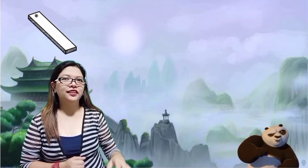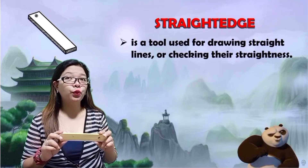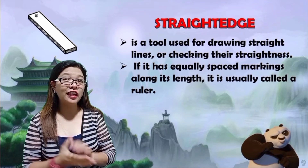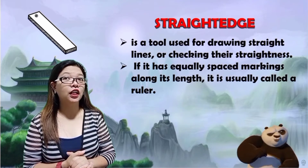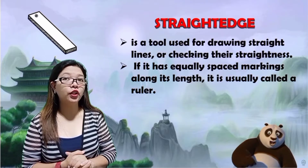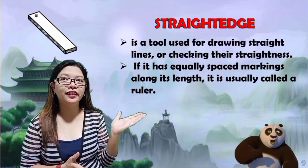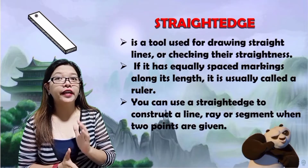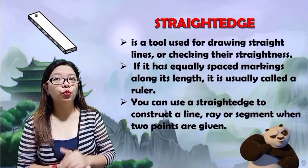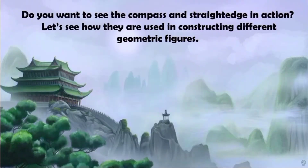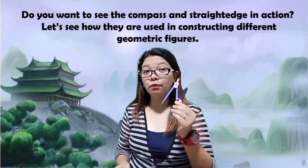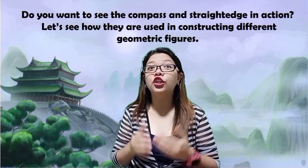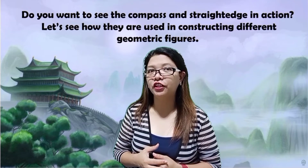Straightedge is a tool used for drawing straight lines or checking their straightness. If it has equally spaced markings along its length, it is usually called a ruler. You can use a straightedge to construct a line, ray, or segment when two points are given. Do you want to see compass and straightedge in action? Let's see how they are used in constructing different geometric figures.